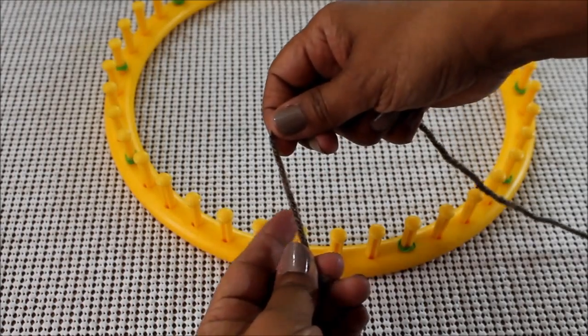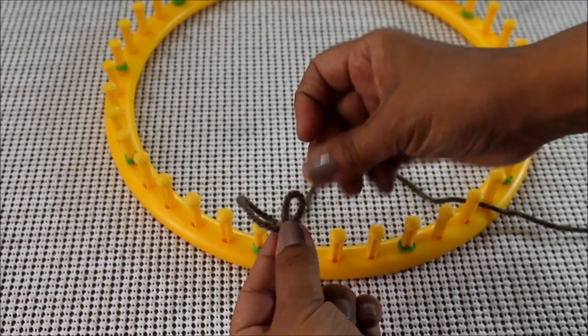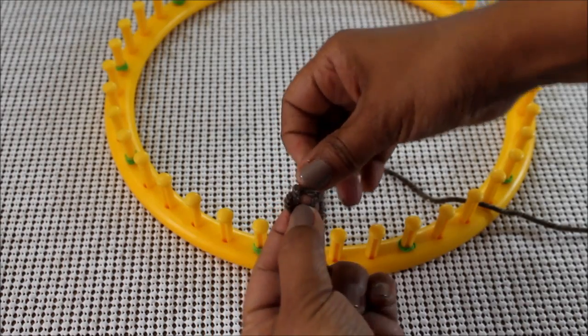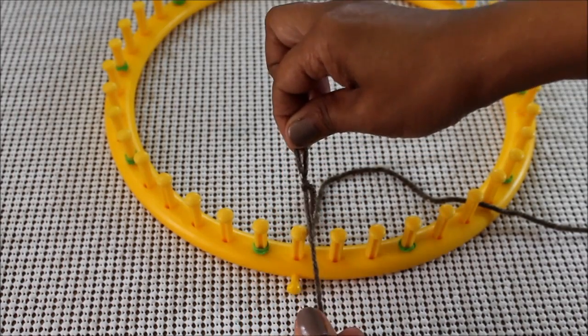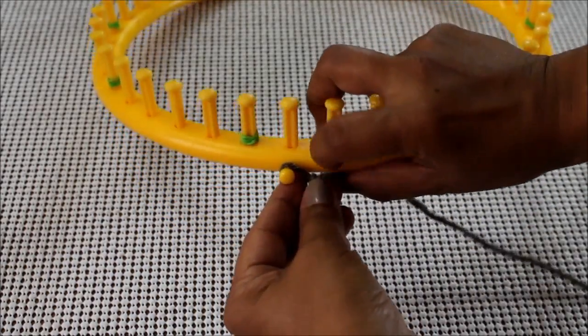I'm going to start with the usual slipknot. Wrap the yarn around your finger, create a loop, take it off, push the yarn through that to create a new loop and put that loop on your anchor peg.